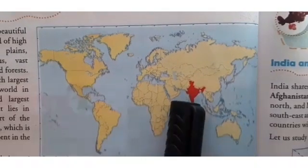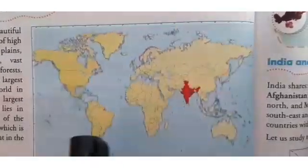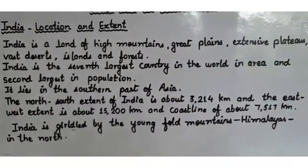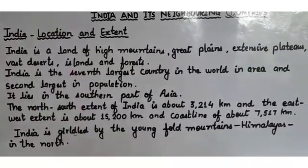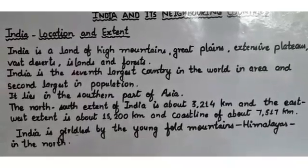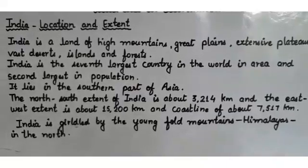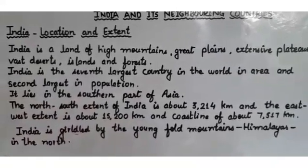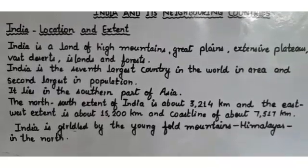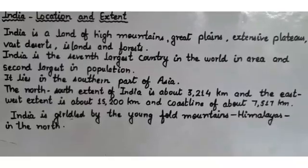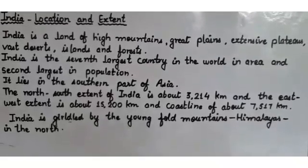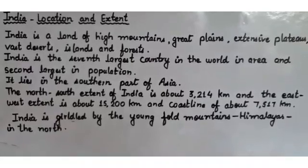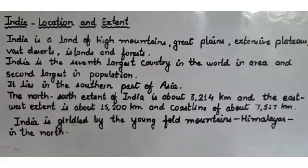This is the location of our country India on the world map. We can also locate India using the coordinates of latitudes and longitudes. India lies to the north of the equator, between 8 degrees 4 minutes and 37 degrees 6 minutes north latitude, and 68 degrees 7 minutes and 97 degrees 25 minutes east longitude.